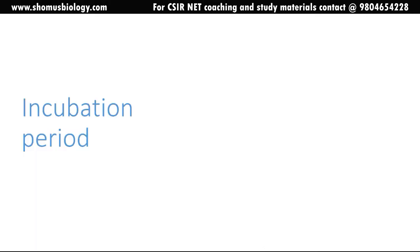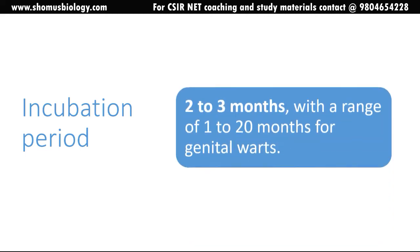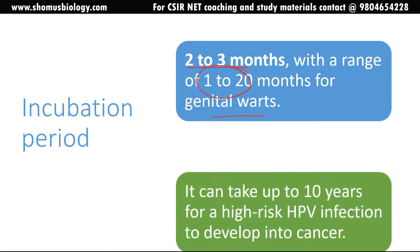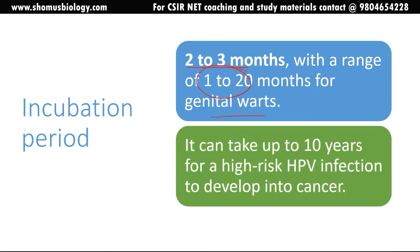The incubation period for human papilloma virus is 2 to 3 months, with a range of 1 to 20 months for genital warts. Normally infection onset presents in 2 to 3 months with symptoms like weakness, muscle ache, fever, and headache, but genital warts can show up from 1 to 20 months. It can take up to 10 years for high-risk HPV infection to develop into cancer because it remains dormant — it is a slow-growing cancer.